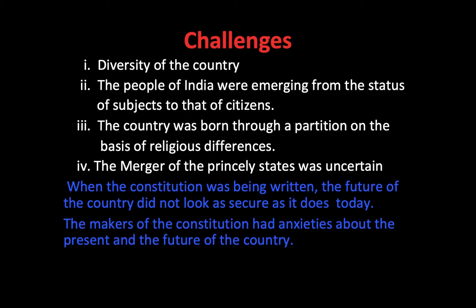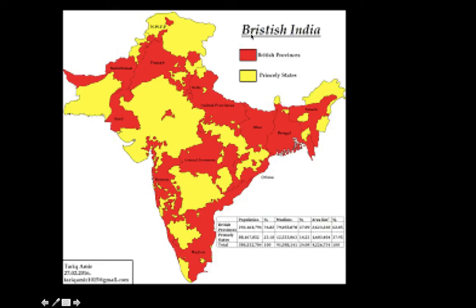The fourth challenge was that the merger of the princely states was uncertain. In British India, there were provinces shown in red on the map — 11 provinces. But the yellow portions on the map were the princely states, ruled by kings. These princely states were under British control. When India became independent in 1947, these princely states also became independent.